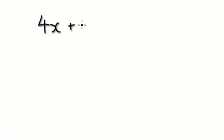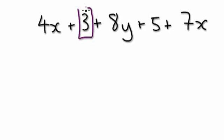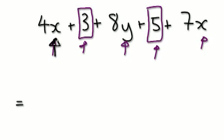All right, let's give you a new example: four x plus three plus eight y plus five plus seven x. Here you've got a three standing on its own and a five standing on its own. Single numbers on their own are like one entity — you can merge them. So you've got four x here and seven x here: four x plus seven x is eleven x.